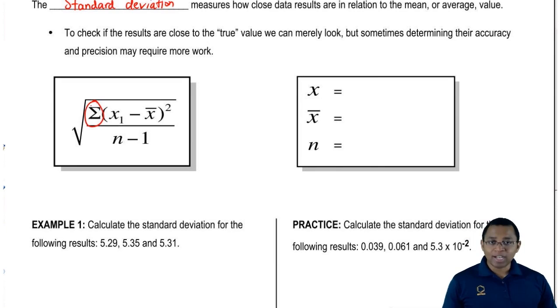We're going to say that x or x₁ is simply a measurement. X with the bar on top of it (x̄) is our mean or average of all the measurements added up and divided by the total number of measurements. Then n represents the number of measurements that we have.